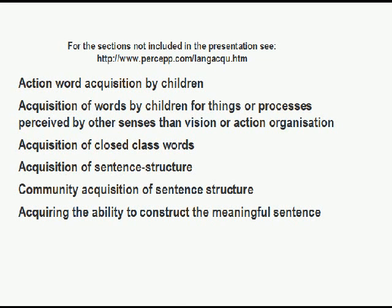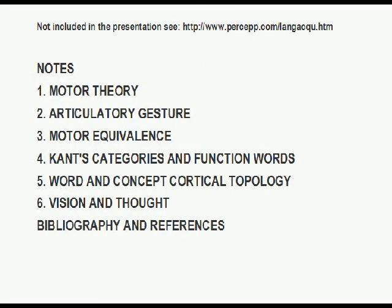I haven't been able to include the full content of my web page about the acquisition of language by children. There are whole sections I haven't been able to cover: action word acquisition by children, the acquisition of words for things perceived by senses other than vision, action organization, the acquisition of closed-class words (function words and grammatical words like 'to' and 'from'), acquisition of sentence structure, and so on. I also haven't been able to include the important notes attached to my paper on motor theory, articulatory gesture, motor equivalence, count categories and their relation to function words, word and concept, cortical topology, vision and thought, and the bibliography and references.